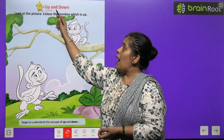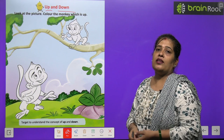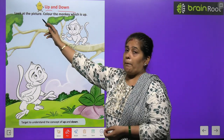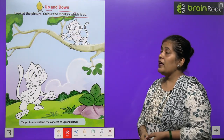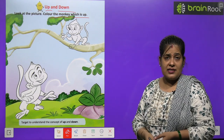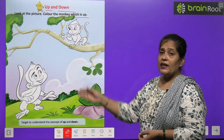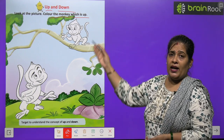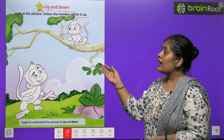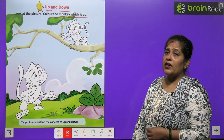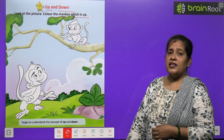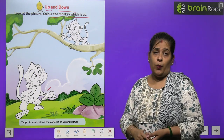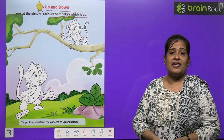Now we will differentiate between up and down. Up کا مطلب ہے اوپر اور down کا مطلب ہے نیچے. Look at the picture — color the monkey which is up. اس پیچر میں دو monkeys ہیں، آپ کو جو monkey tree کے اوپر ہے اس کو بہت سندھر سے color کرنا ہے. This monkey is up, تو یہ monkey اوپر ہے، آپ کو اس کو بہت سندھر سے color کرنا ہے.